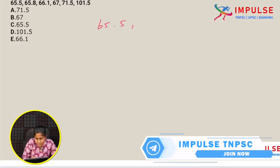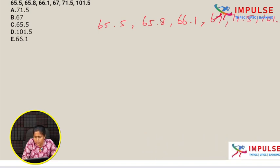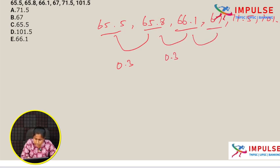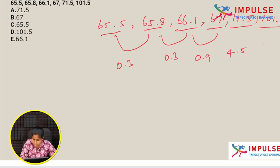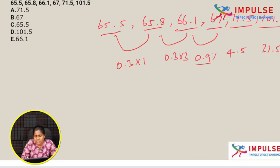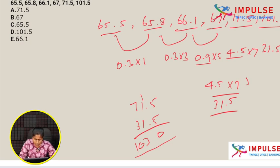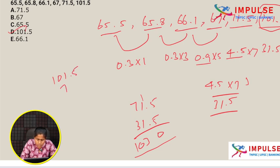Next series: 65.5, 65.8, 66.1, 67, 71.5, 101.5. First to second difference is 0.3, second to third is 0.3, then differences are 0.9, 4.5, 31.5 — multiplying by 1, then by 3, then by 5, then by 7. So the pattern shows 101.5 should be 701.5 based on 31.5 into 7. The wrong number is 101.5. Option D.